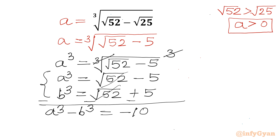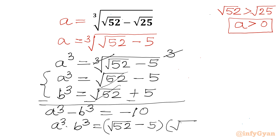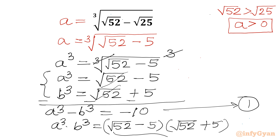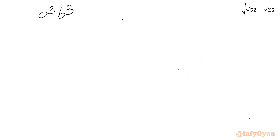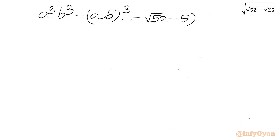Now I will multiply a cubed and b cubed. So a cubed times b cubed will be equal to (square root 52 minus 5) times (square root 52 plus 5). Let us call this equation number 1. Here a minus b times a plus b is written, so we can use the difference of two squares formula. And it is equal to (square root 52 minus 5) times (square root 52 plus 5).